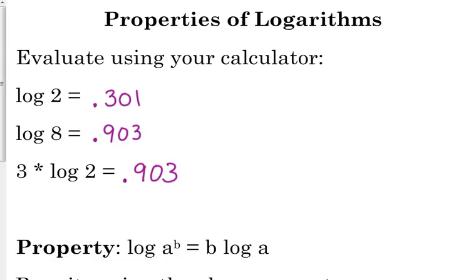So if the log of 2 is equal to 0.301, the log of 8 is equal to 0.903, and 3 times the log of 2 is also 0.903. So there's something going on here with this relationship. Is there some way that we can rewrite 8 so that it has a base of 2? 2 to what power is 8? The 3rd, right? 2 cubed is 8.